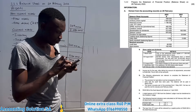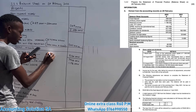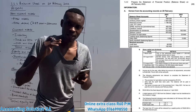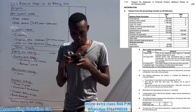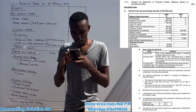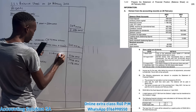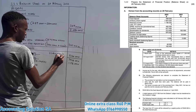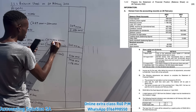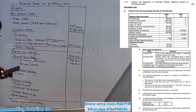We also have provision for bad debts. The opening balance is 23,600-something, but transaction D says it must be increased by 2,610. So we add: 23,640 plus 2,610 equals 26,250, which we subtract from debtors.